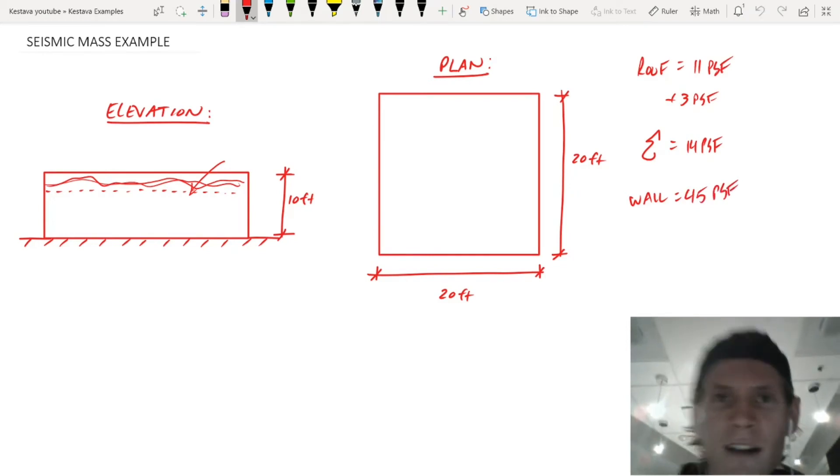So weight's important for seismic, it drives the whole design. So the heavier your building, the more seismic loading and effects your building is going to experience. So just for today, we're going to assume just those three things for the walls. So two and two and a half and 40. So that's 44 and a half, let's just round up to 45 PSF for the walls. 45 PSF.